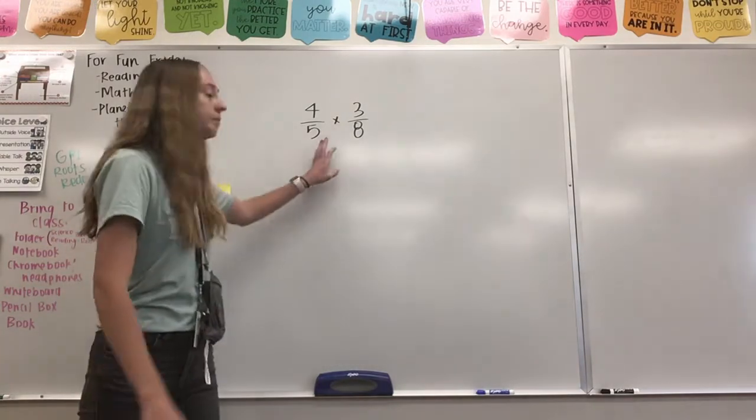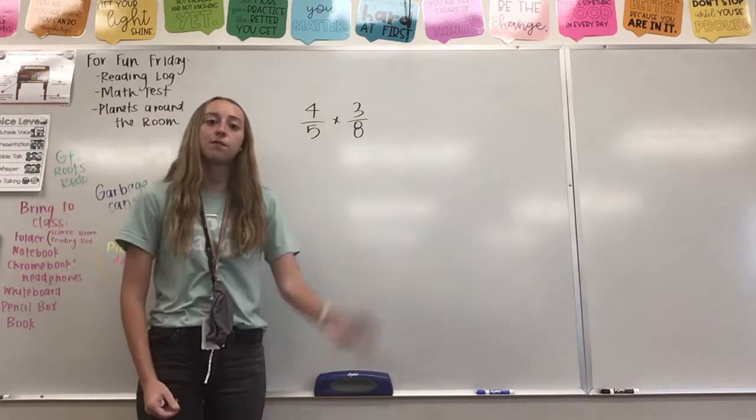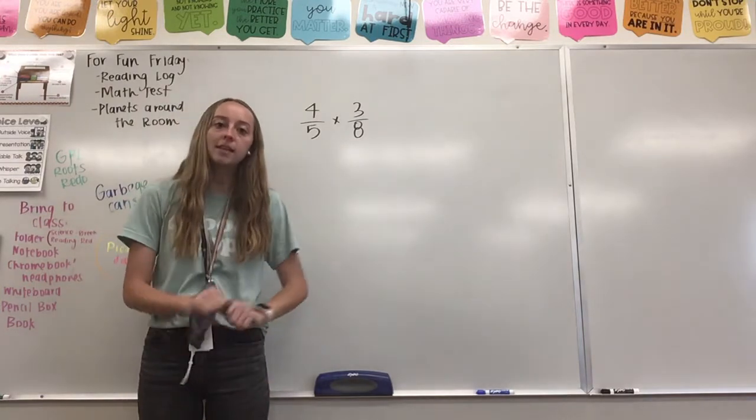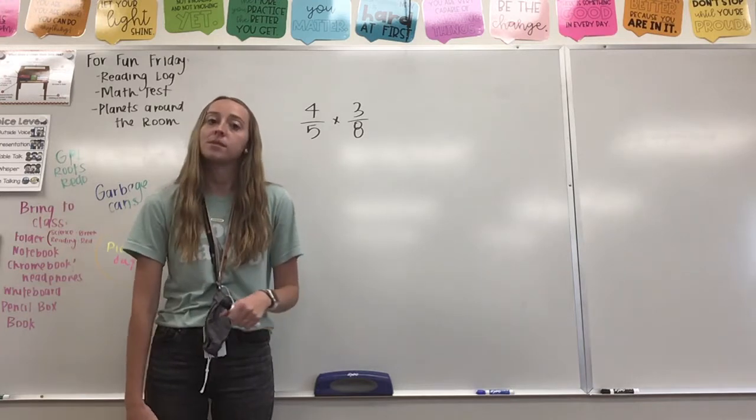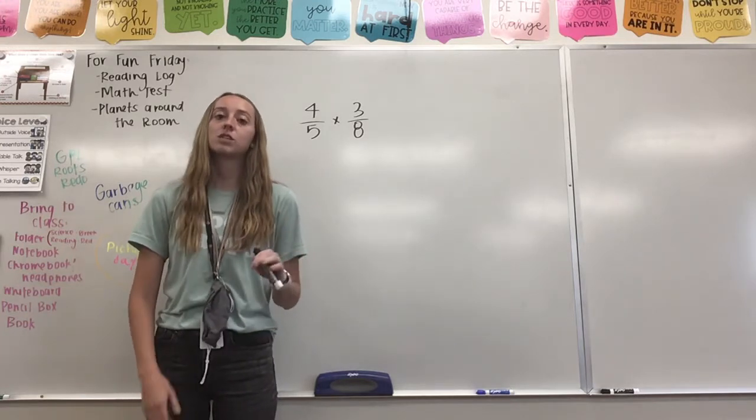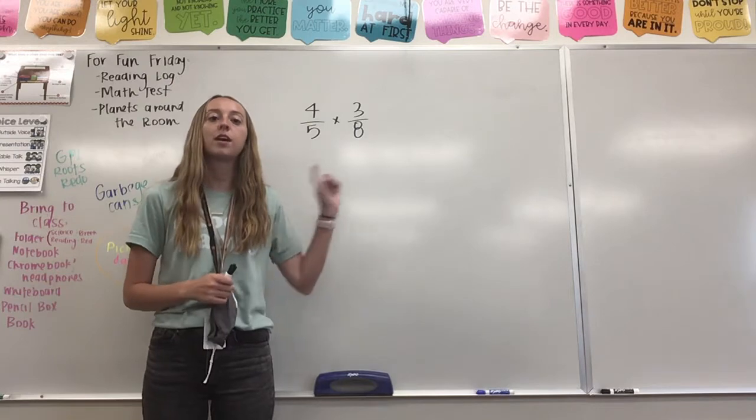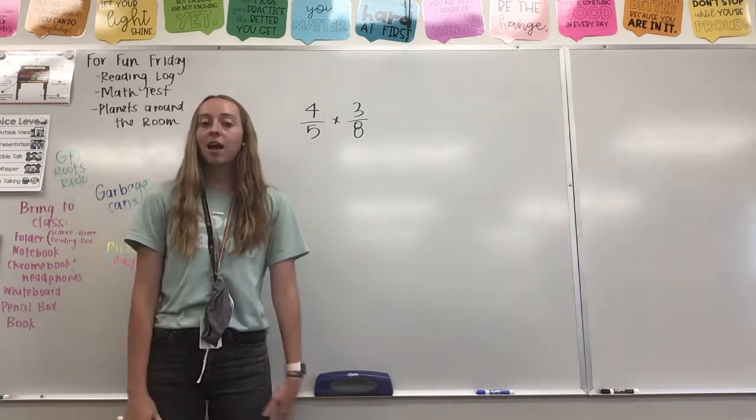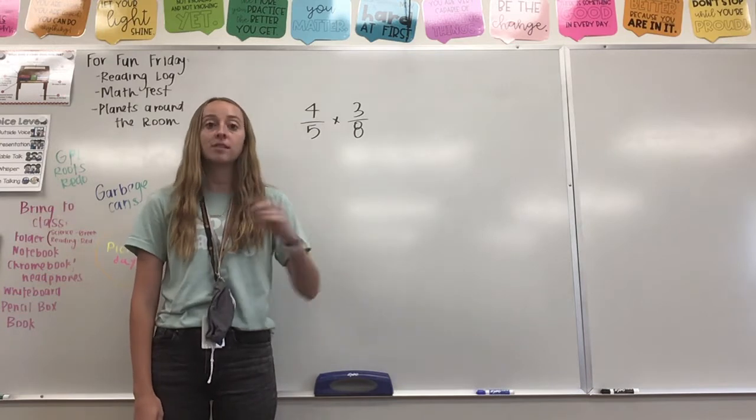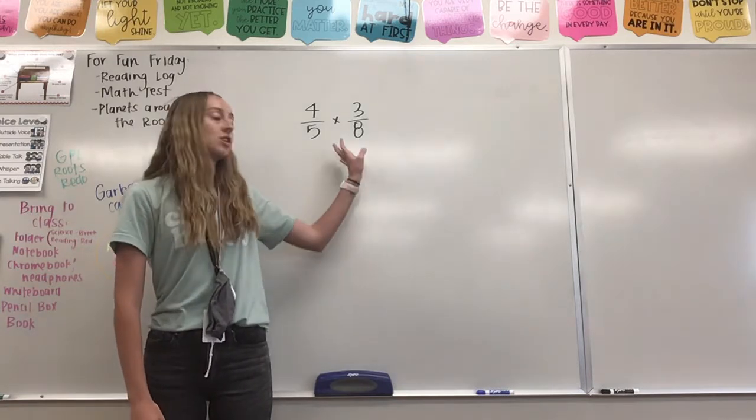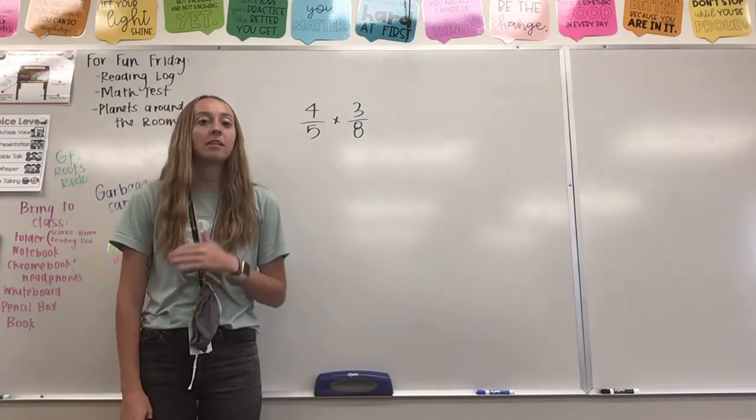So I have this problem up here on the board, it's 4 fifths times by 3 eighths, that's what we're going to be solving, and I'm just going to walk you through the steps. So when we multiply fractions, we multiply straight across. We do not have to have matching denominators like we do when we add and subtract, so I actually don't have to do anything to this problem, I can just multiply.